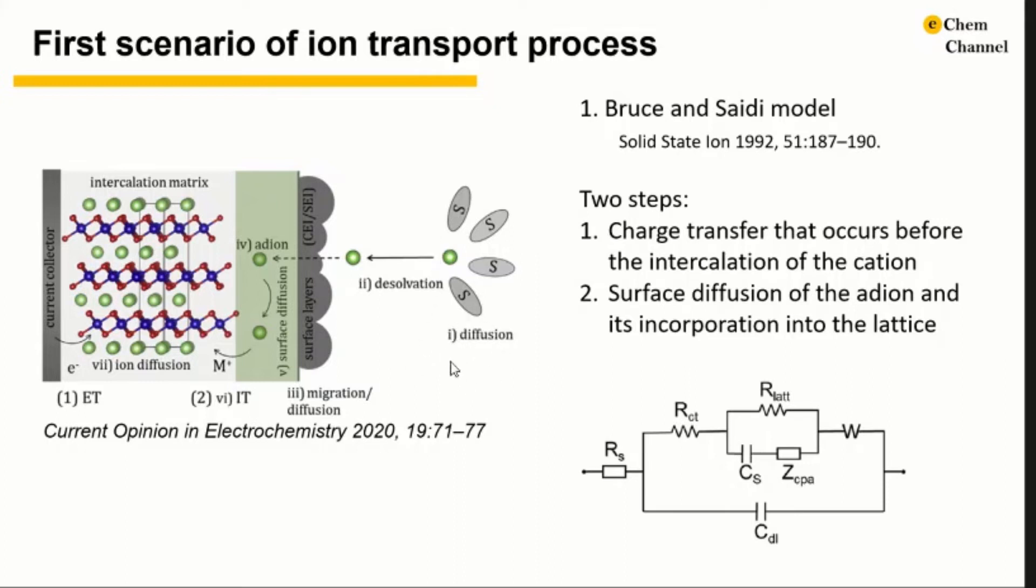First, ion diffusion in the electrolyte. Second, ion desolvation in the vicinity of the SEI layer. The third step, ionic migration through the surface layers. Step 4, ion adsorption at the lateral surface or the formation of the so-called adion. Step 5, surface diffusion of adion. Step 6, charge transfer across the SEI layer. And step 7, ion solid state diffusion in the host lattice.